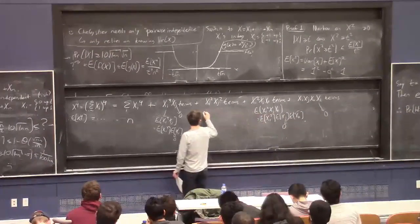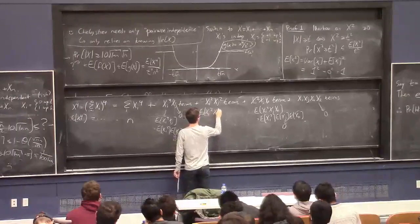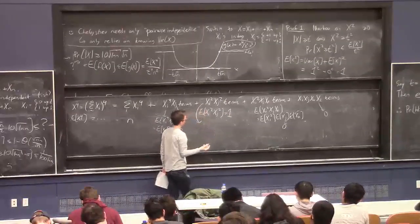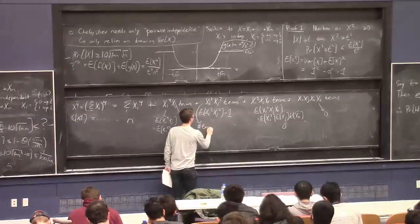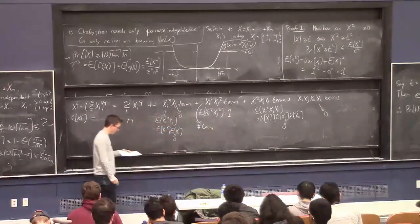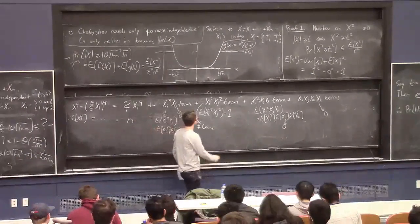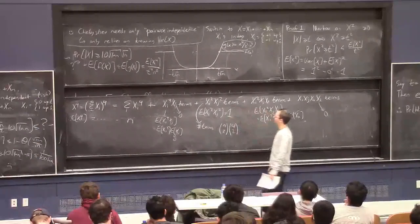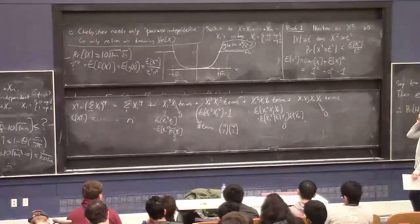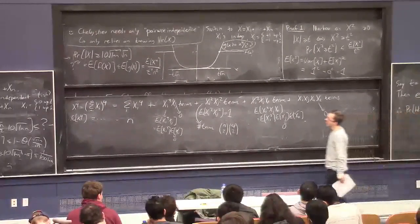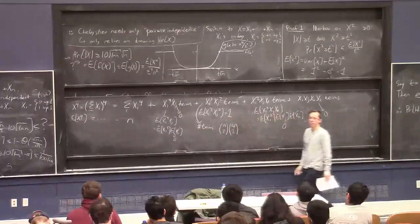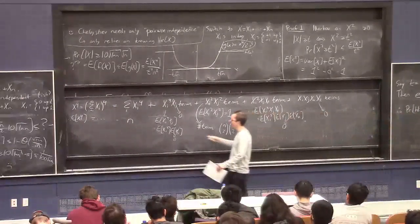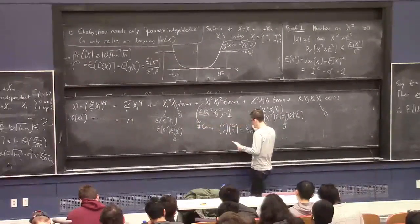The only thing we have left is the xi squared xj squared terms. Since xi and xj are always plus or minus 1, xi squared times xj squared is just 1. So the contribution is just the count of such terms, which requires combinatorics. The number of terms like this is n choose 2 times 4 choose 2 — you choose 2 indices i and j out of n, and there are 4 choose 2 ways of arranging them. This gives 3n squared minus 3n.